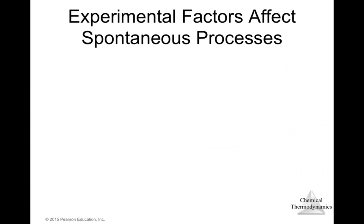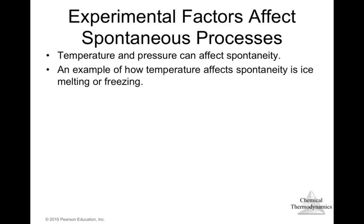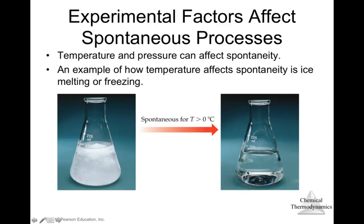There are a few experimental factors that can affect the spontaneity of a process; two of them are temperature and pressure. An example of how temperature affects spontaneity is ice melting and freezing. At temperatures higher than zero degrees Celsius, ice melts to liquid — this is a spontaneous process.